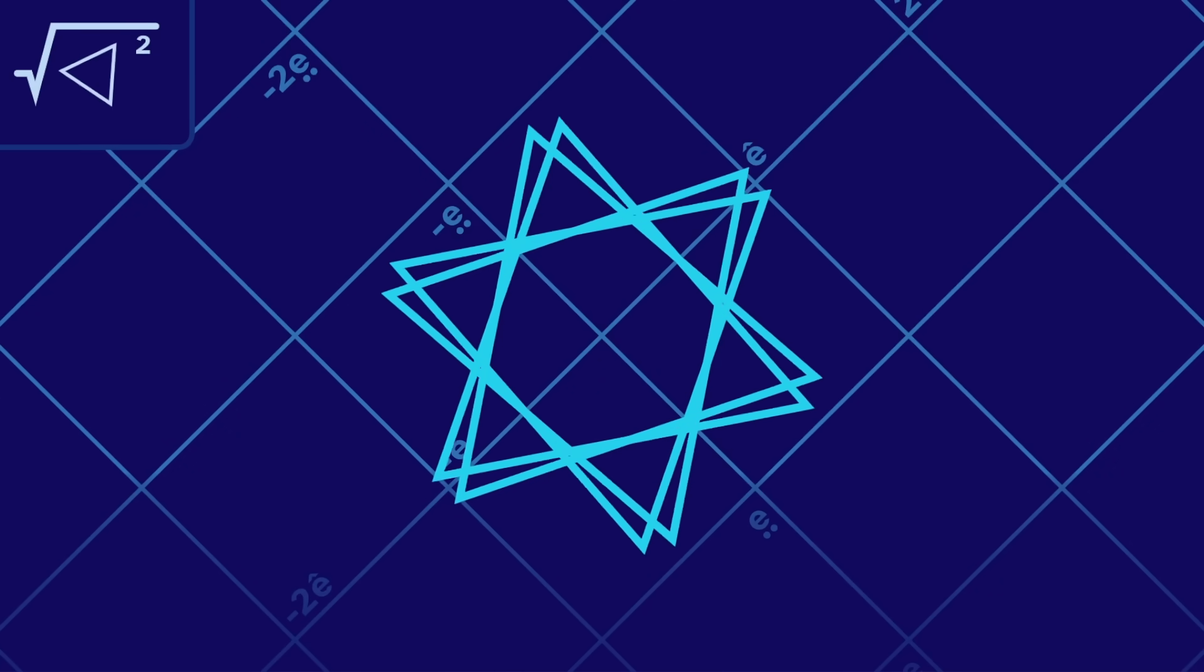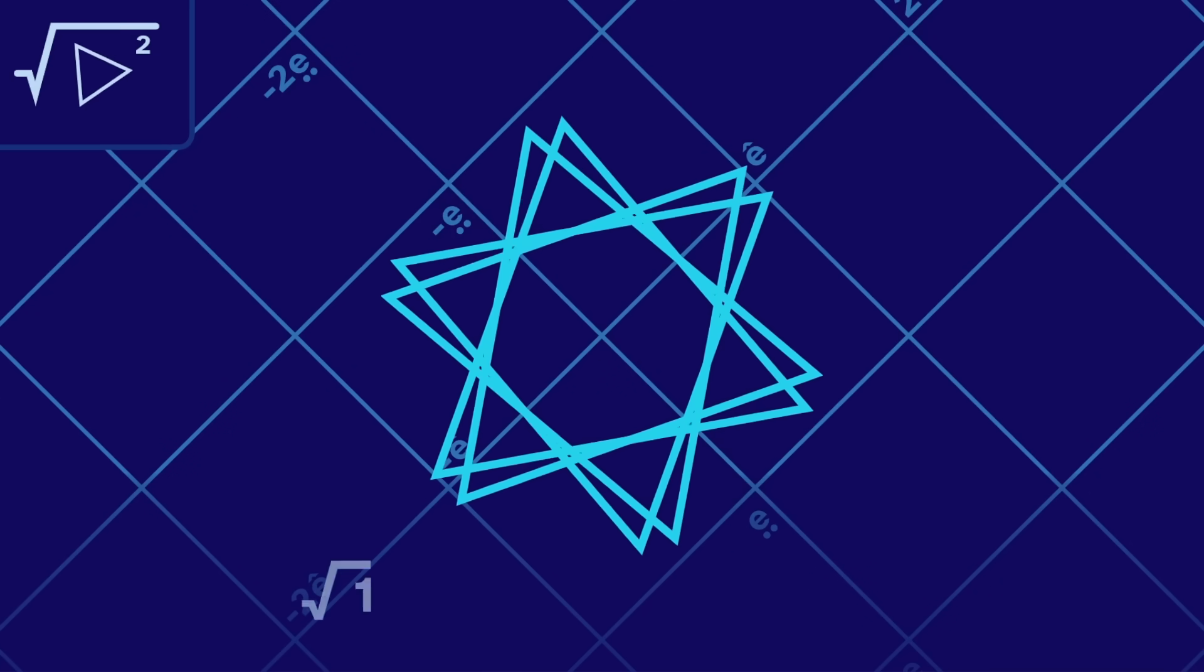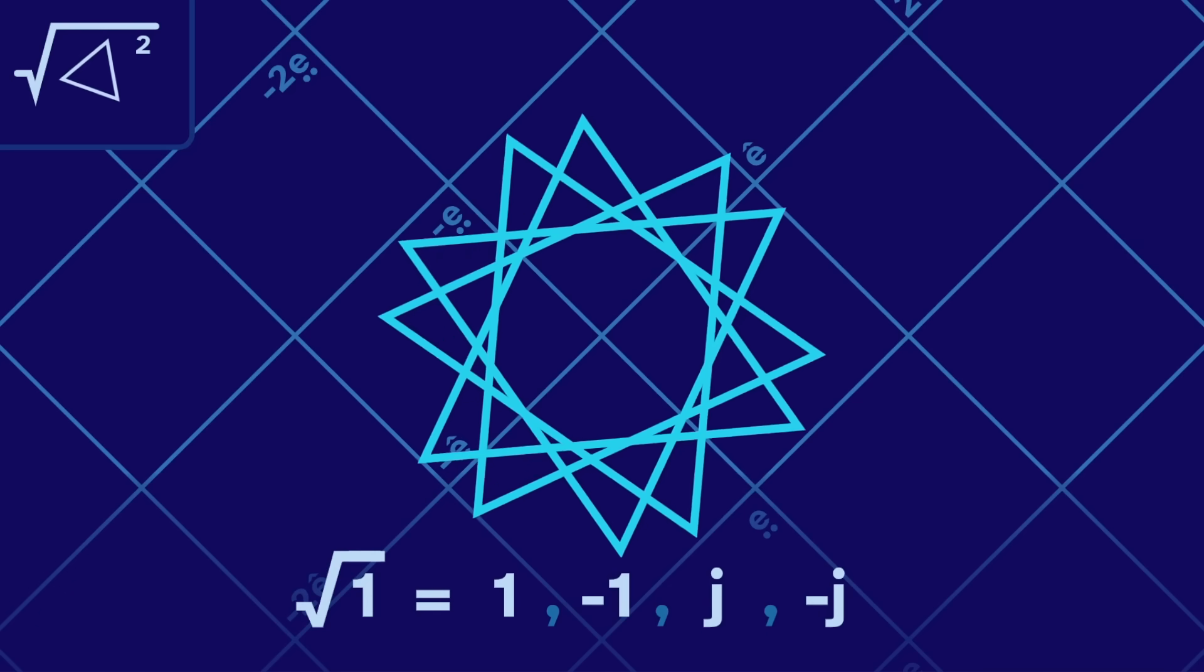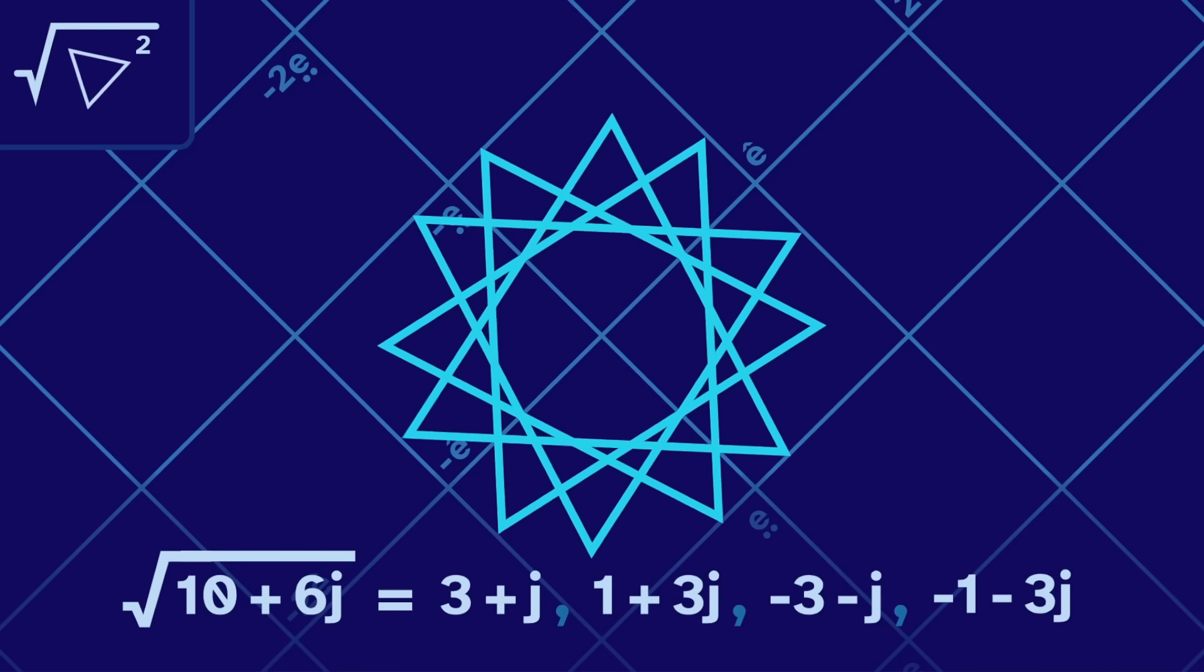If we square a triangle, then root it, we end up with four triangles. One has four different square roots, and the same is true for most squares.